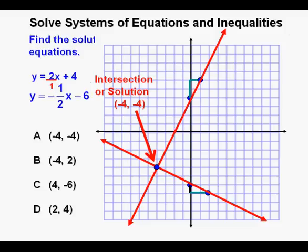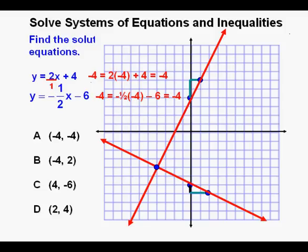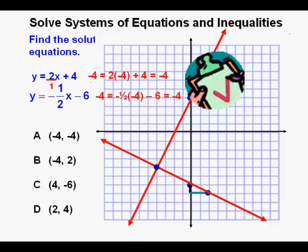The coordinates of this point appear to be negative 4, negative 4. It's important when possible to check the solution by plugging the answer back into the equations. For the first equation we have negative 4 equals 2 times negative 2 plus 4, which equals negative 4. For the second equation we have negative 4 equals negative one-half times negative 4 minus 6, which equals negative 4. Check. So we graphed the system, found our solution at (−4, −4), checked our solution, and circle our correct answer, A.